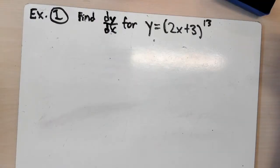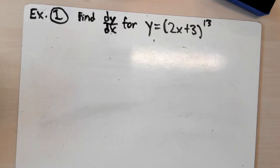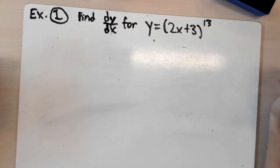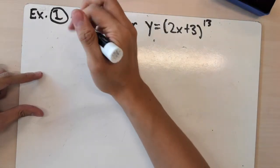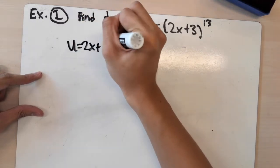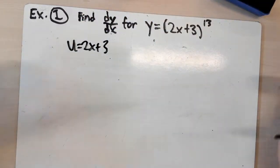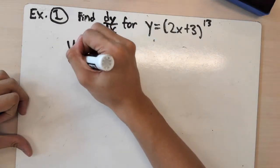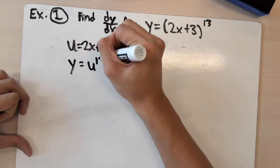Let's start with this problem: find the derivative of y equals (2x plus 3) to the thirteenth. You can pause the video and try it yourself. The strategy is to break it down into two smaller functions. We have 2x plus 3 as the inner function, so we let u equal 2x plus 3, and the outer function is y equals u to the thirteenth.